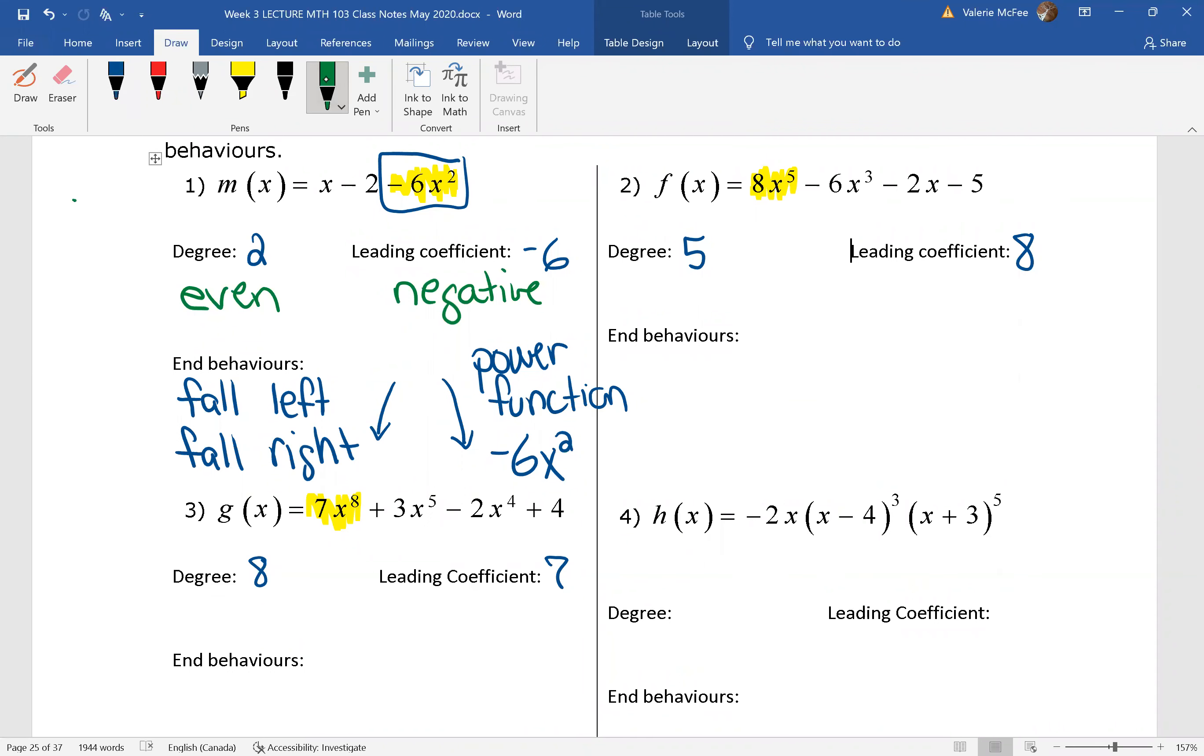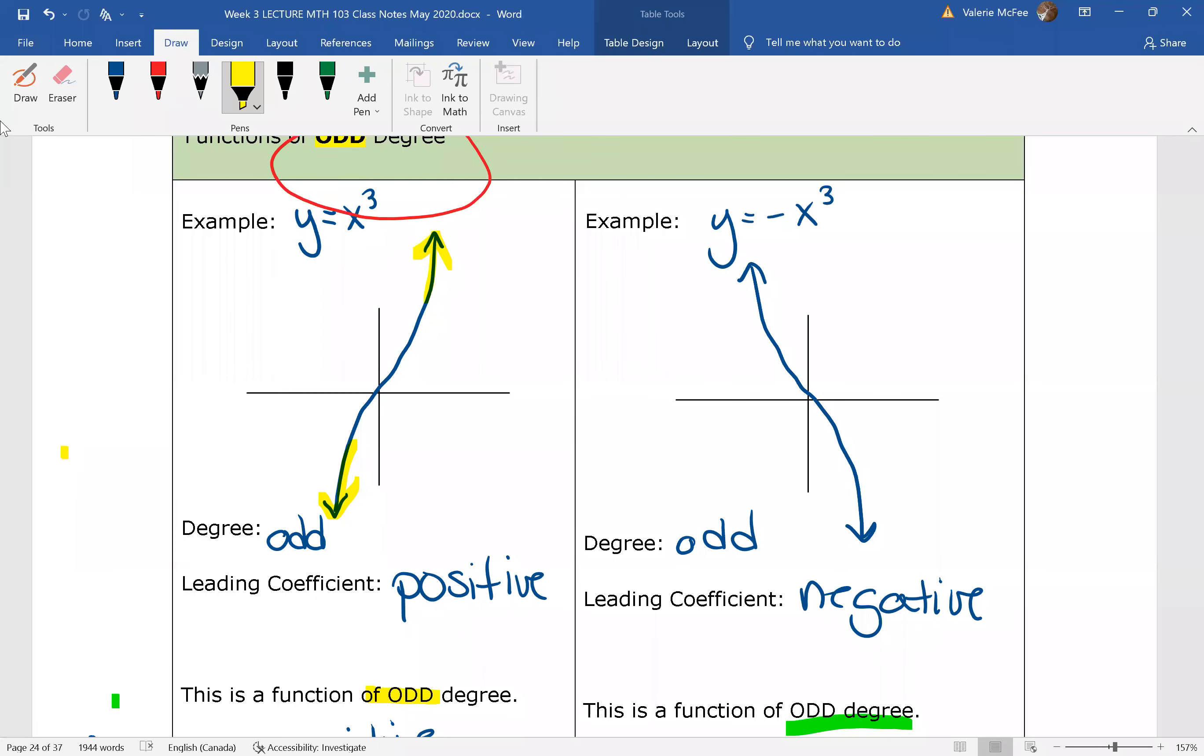In question two, we have an odd degree with a positive leading coefficient. What does this mean for our end behaviors? We remember that we need to think about the graph of x³, where the graph falls on the left and rises on the right.